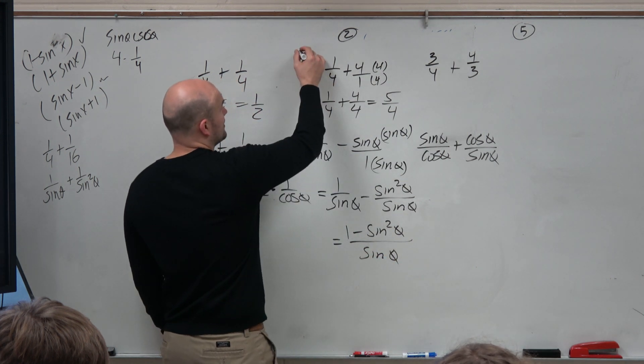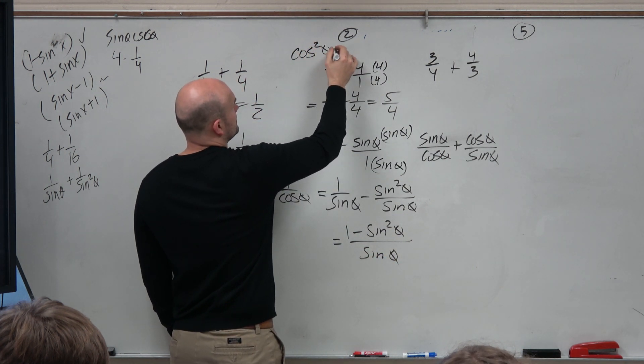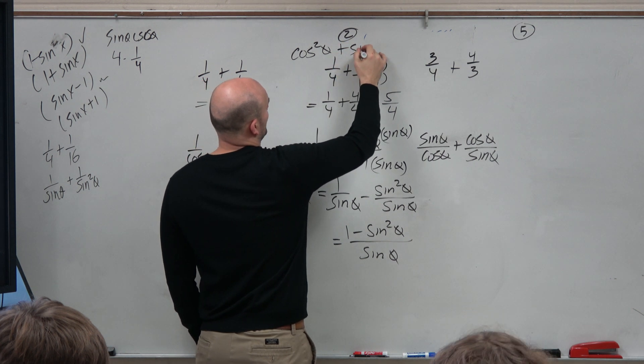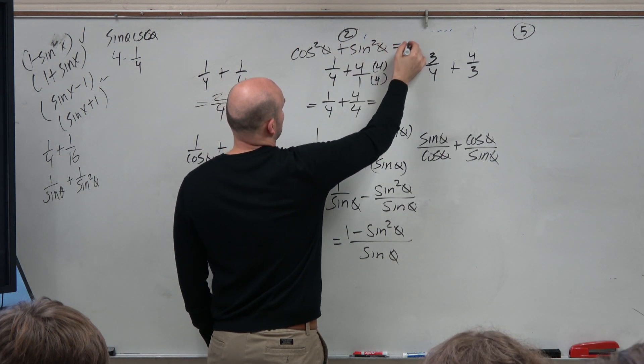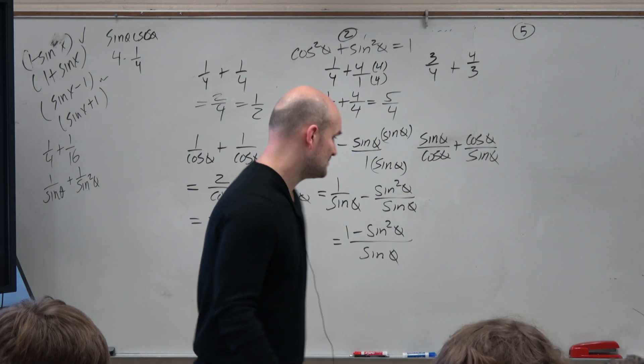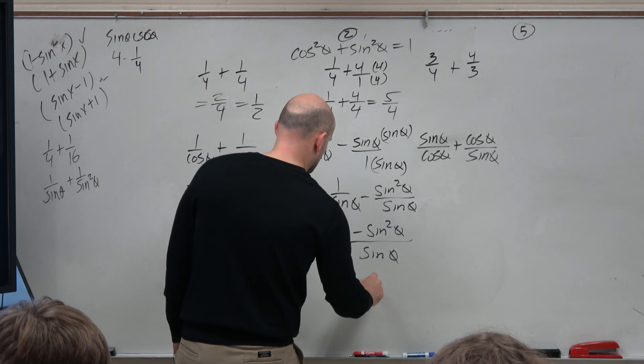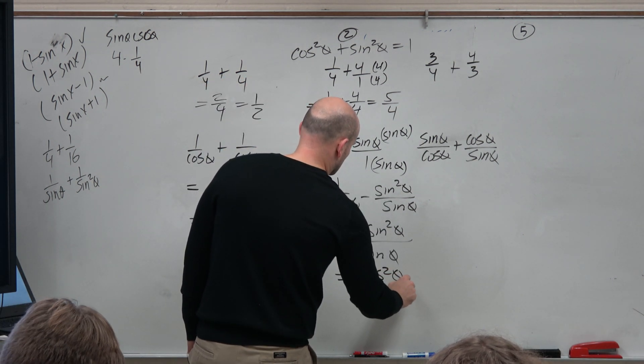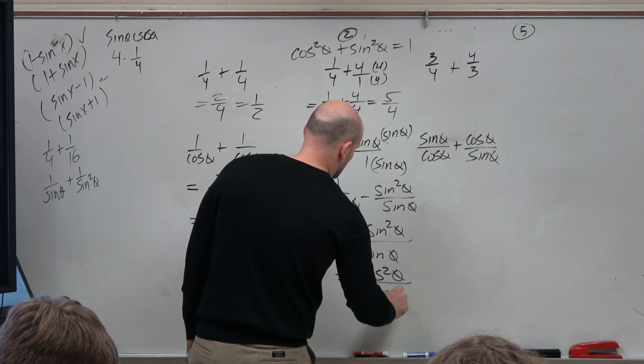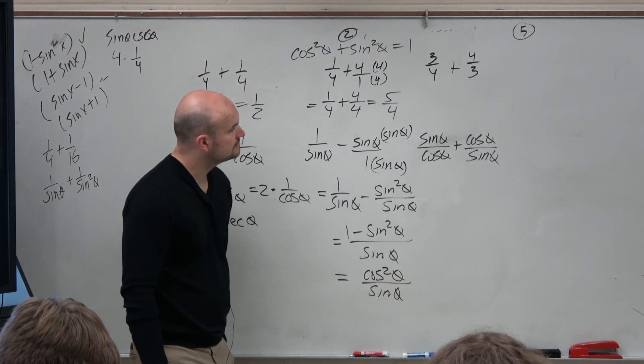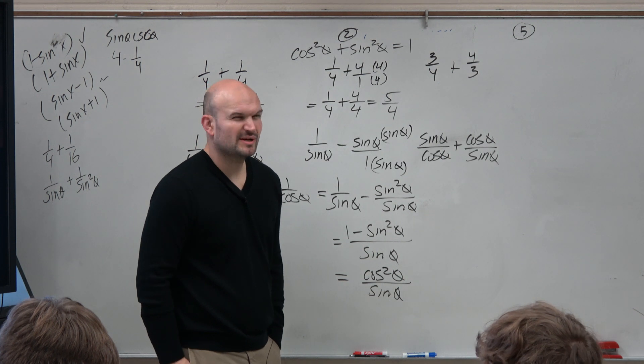Well, remembering that Pythagorean identity, what do I recognize about the 1 minus sine squared of theta? What does that equal to? Cosine squared. Cosine squared.